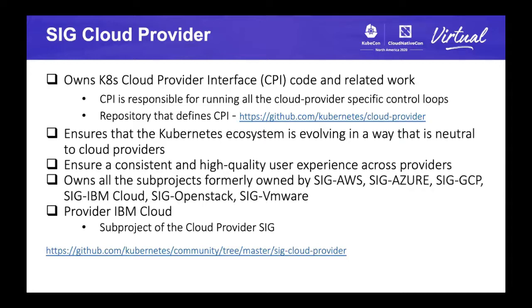Just to brief about Cloud Provider Special Interest Group — it is one of the 30-plus special interest groups in Kubernetes. It owns the Kubernetes Cloud Provider interface, which is responsible for running all the cloud provider-specific control loops. The SIG ensures that the Kubernetes ecosystem evolves in a way that is neutral to all cloud providers, with no favor given to one over another, and ensures a consistent and high-quality user experience across different cloud providers.